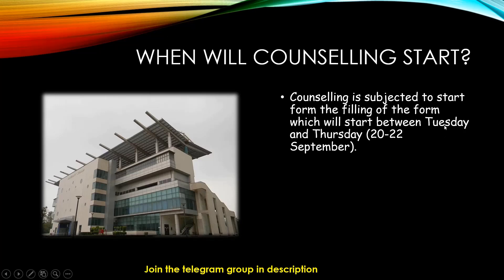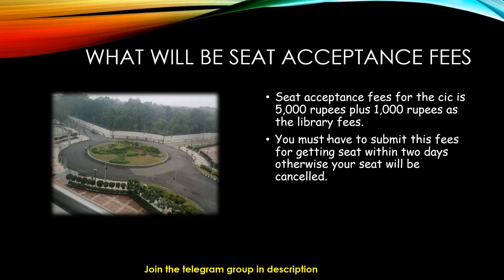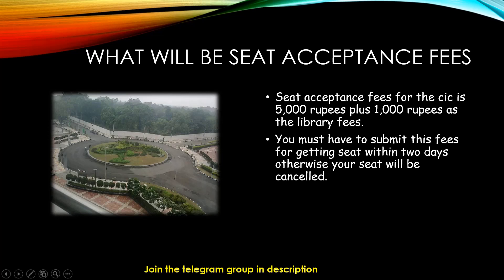Counseling is scheduled to start between Tuesday to Thursday, that is 20 to 22 September. Forms will be live and you can start filling them up. After filling the form, CIC DU will release a list of students, and on the basis of that it will take the top 50 students — there are only 50 seats in CIC DU, out of which 27 are reserved for OBC and others for SC and ST category students. The seat acceptance fee is 5,000 rupees plus 1,000 rupees library fee for the first semester, and 5,000 rupees for the second semester — so you pay only 6,000 rupees to accept the seat. Submit this 6,000 rupees fee as soon as you get the offer, because CIC closes the submission window very quickly, wrapping up the entire admission process within two to three days.